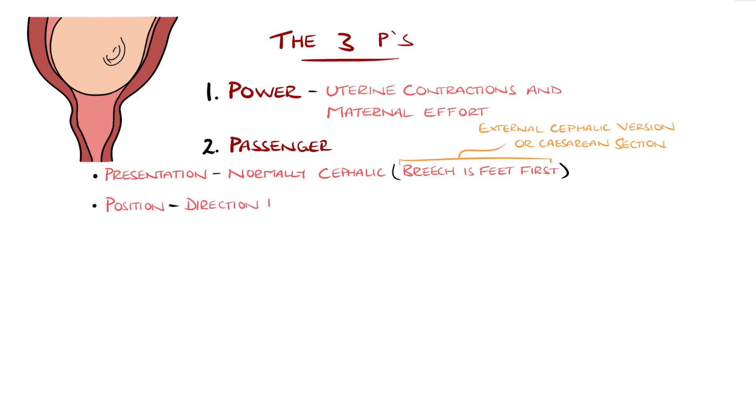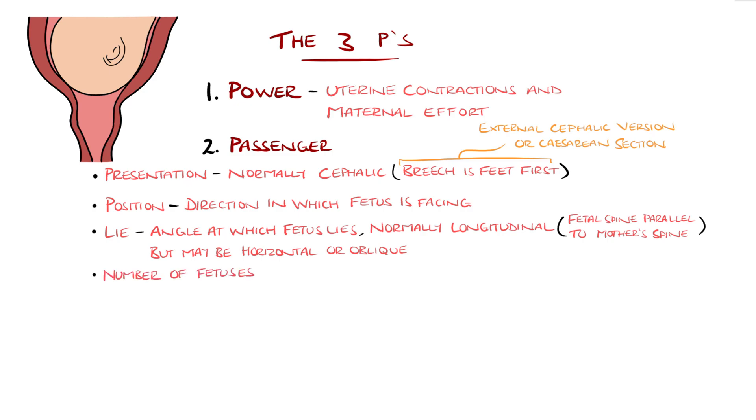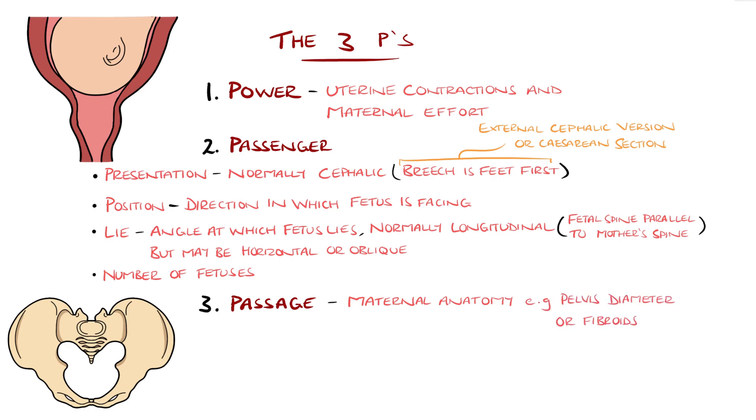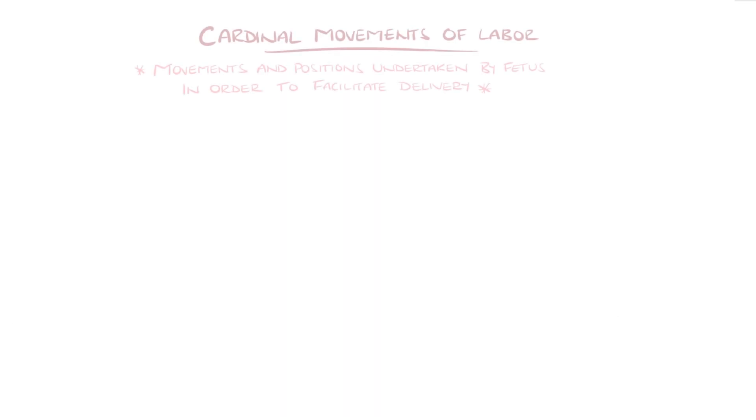Position: this is generally the direction in which the fetus is facing. Lie: which is the angle at which the fetus lies, for example, the typical is a longitudinal lie, where the maternal and fetal spines are parallel, compared to a horizontal lie, in which the fetus's spine is transverse to the mother's, or somewhere in between, termed oblique. The number of fetuses is also a factor. The third P is passage. This refers to the maternal anatomy, for example, the diameter of the maternal pelvis, or presence of a structural abnormality, such as fibroids.